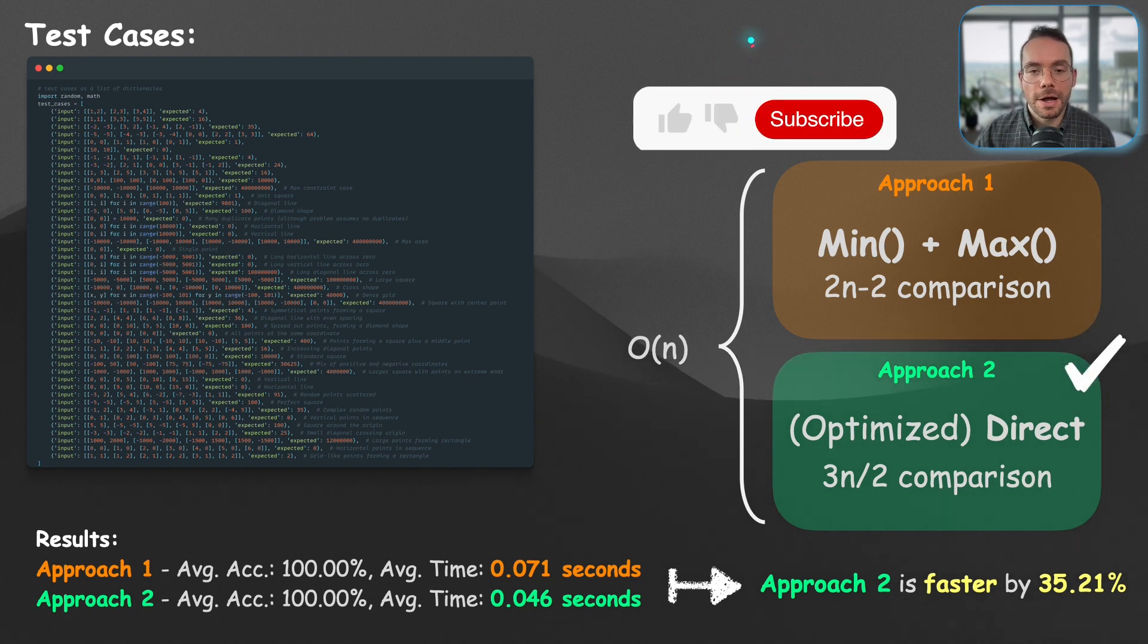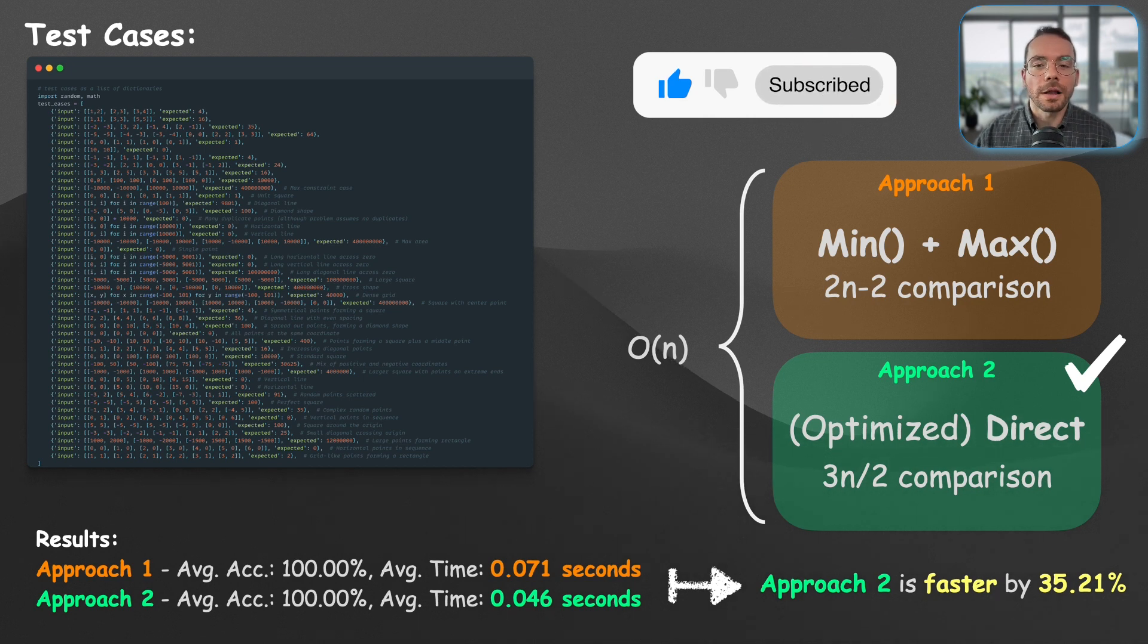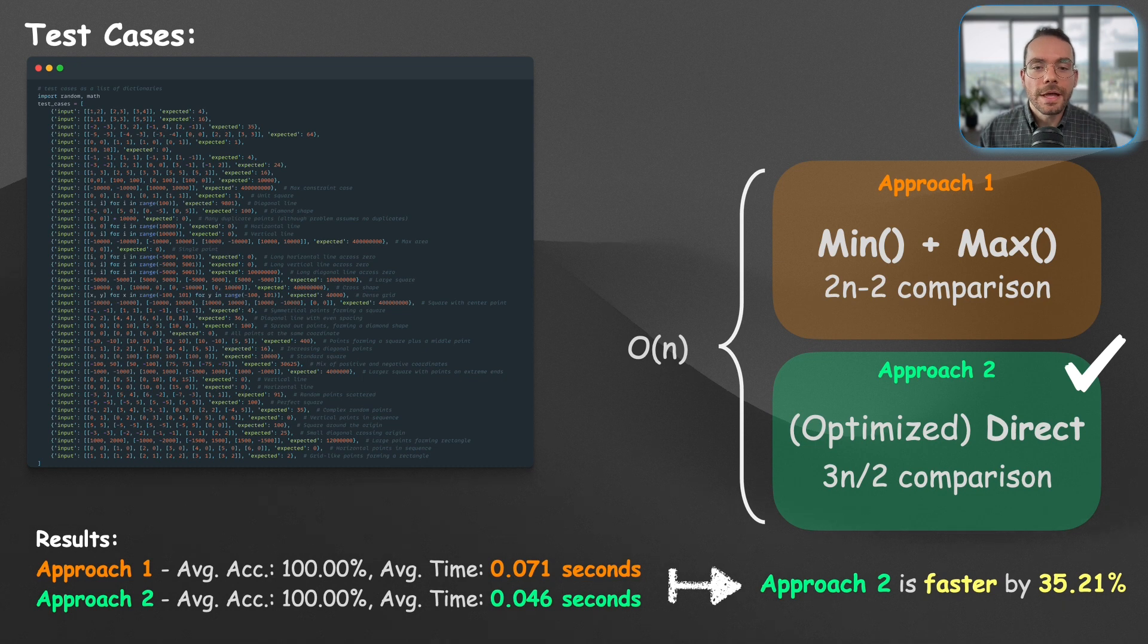This is a significant speed up by a constant factor optimization. And you can tell, for a high-frequency, large-scale application, this can potentially lead into a significant amount of saving in computational resources every single month.